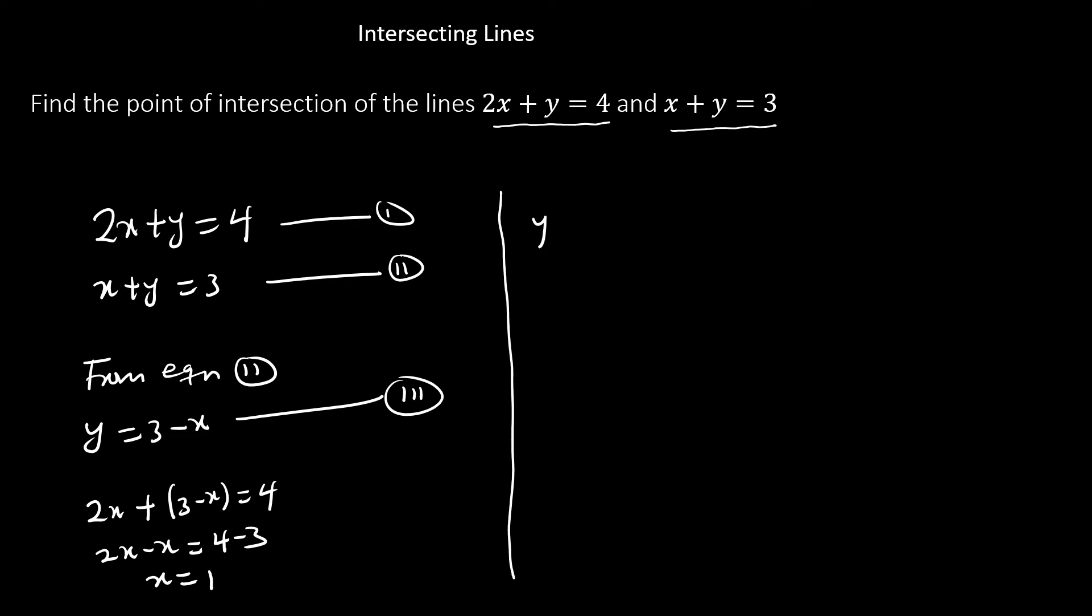Then from equation 3, we have y equal to 3 minus x. And this is y equal to 3 minus x which is 1, and we have our y to be equal to 2.